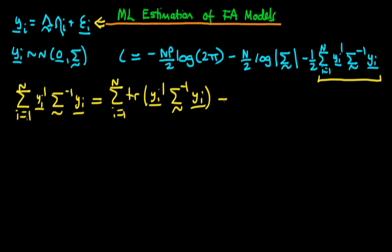Then we use another trick. We pre-multiply by n, and then divide this expression in the brackets by n. So we get n times the sum from i equals 1 to n of the trace of n to the power minus 1 times yi transposed times the inverse of sigma times yi.